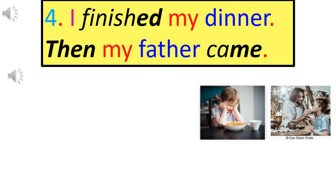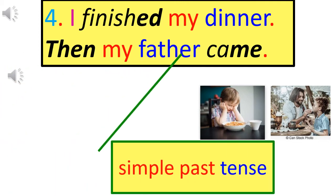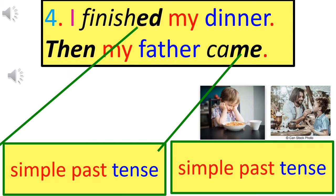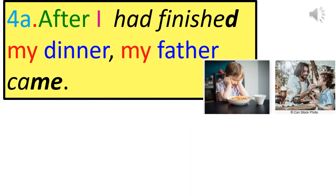Sentence pair 4: 'I finished my dinner. Then my father came.' Simple Past is used with finished actions. When we combine the two sentences, the adverb 'then' is automatically omitted. Combined answer: 'After I had finished my dinner, my father came.'